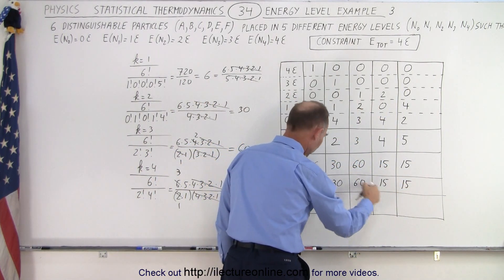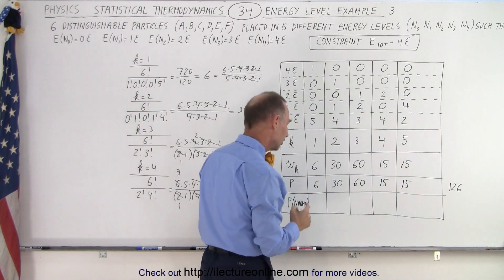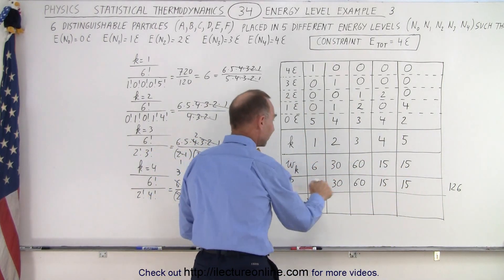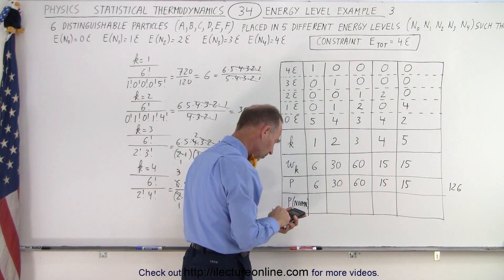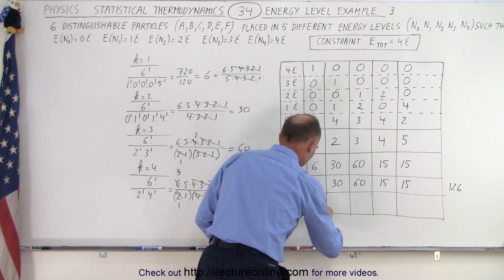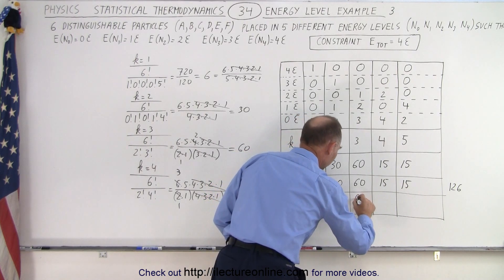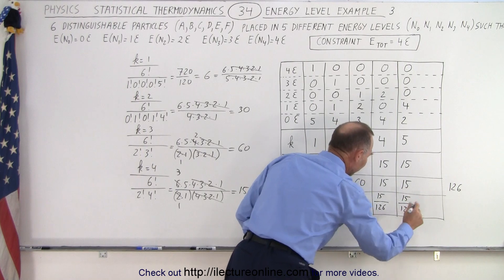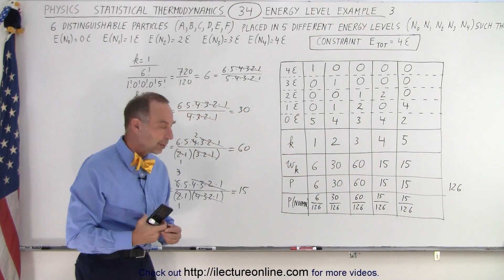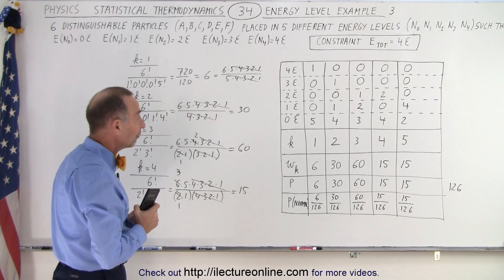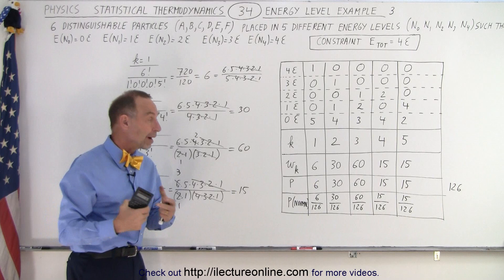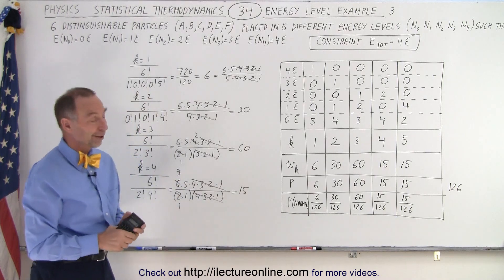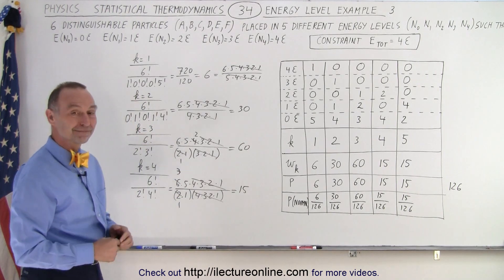Adding up all the probabilities: 6 plus 30 plus 60 plus 15 plus 15 gives 126 total microstates. The normalized probabilities are then six divided by 126, thirty divided by 126, sixty divided by 126, fifteen divided by 126, and fifteen divided by 126. Add them all up and you get one. Those are the five macrostates with each one's number of microstates calculated, and that is how it's done.